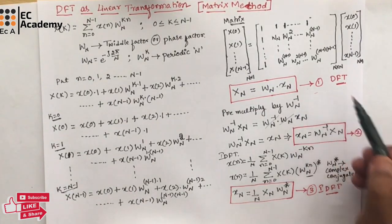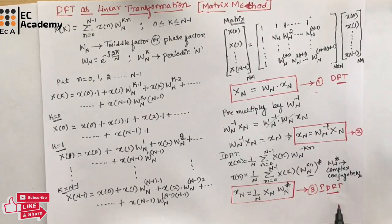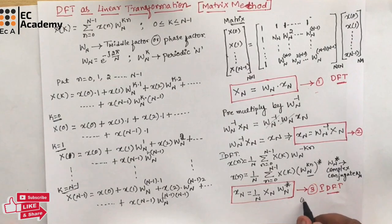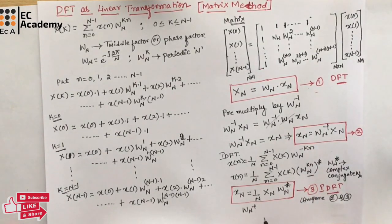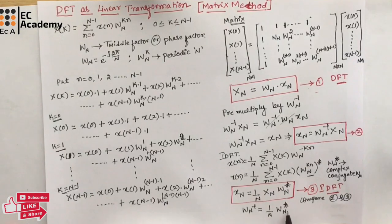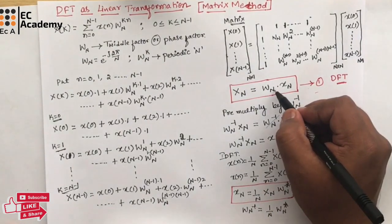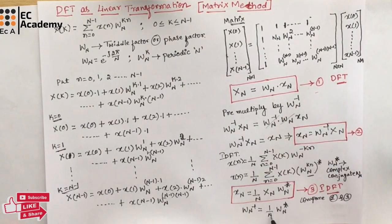So, using Equation 1 we can find DFT, and using Equation 3 we can find IDFT. Comparing Equations 2 and 3, since x(N) and X(N) are common in both, we can write: W_N inverse = (1/N) · W_N*. This is the relation between the DFT matrix and the IDFT matrix — W_N is the DFT matrix, and applying complex conjugate and dividing by N gives the IDFT matrix.